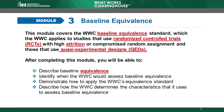The WWC uses the baseline equivalent standard to determine whether the intervention and comparison groups in a study were similar before the start of an intervention. This is important because establishing equivalence between the two groups at baseline gives us more confidence that any differences in measured outcomes between the two groups were caused by the intervention.